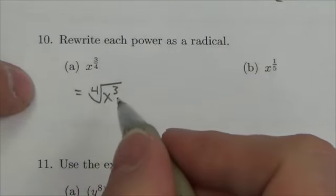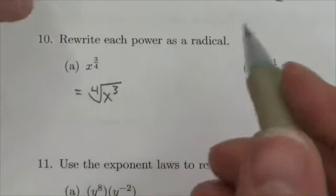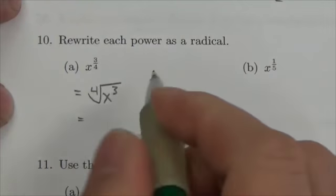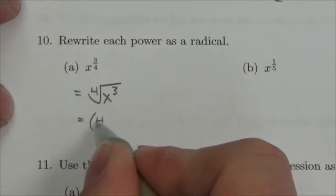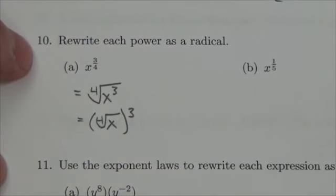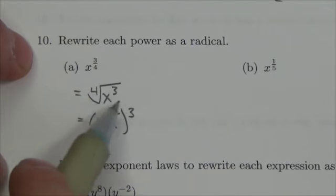Now it turns out there's another way of doing this because order of operations in this sense doesn't really matter. You could do, for example, this could be the fourth root of x and you could cube the final result. Either one of those is totally acceptable, it doesn't matter, although I think most of you would just write it like this anyway.